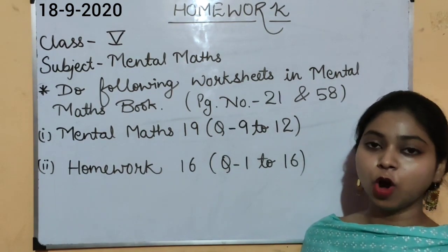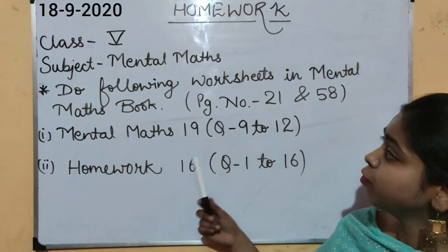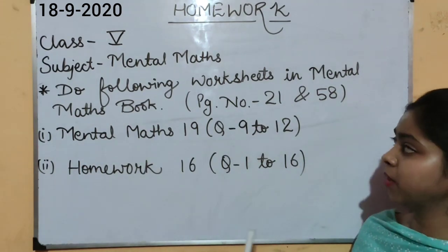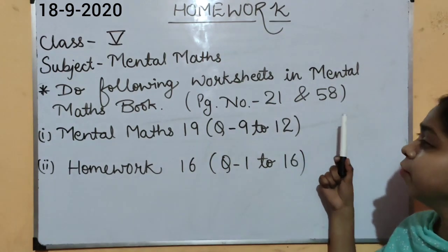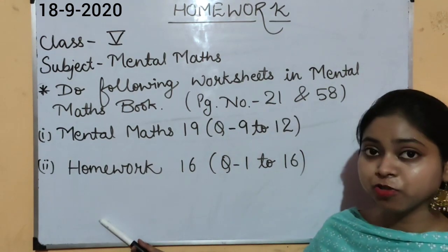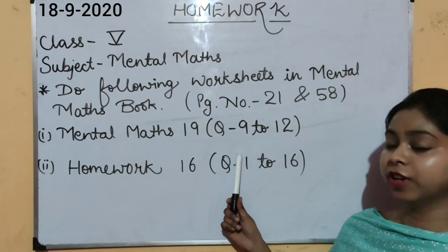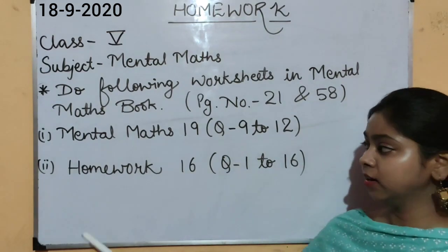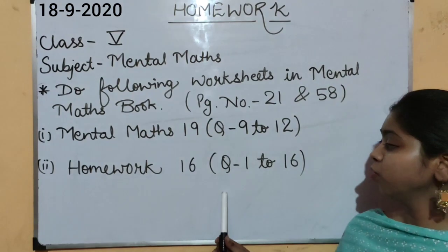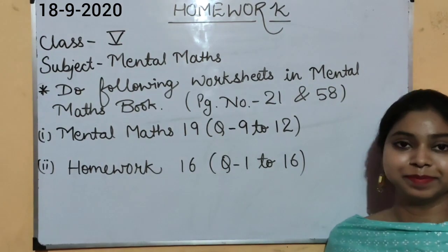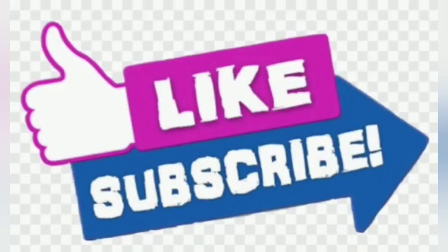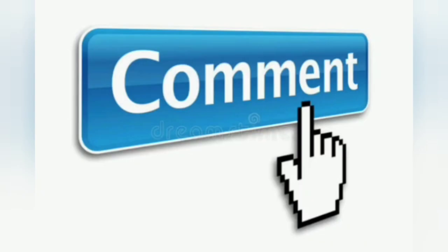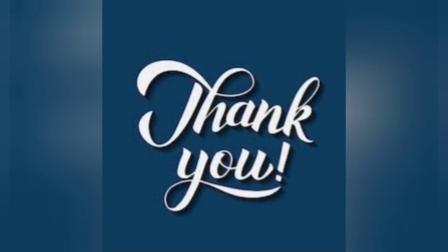Now it's time for your homework. Do the following worksheets in your Mental Maths book as given on page numbers 21 and 58. Your first worksheet is Mental Maths 19, questions 9 to 12. The second one is Homework 16, questions 1 to 16. Viewers, kindly like and subscribe to my video to get more notifications and updates. Students, kindly mention your name, class, and section in the comment box. Thank you for watching.